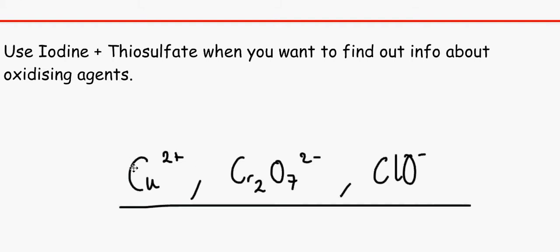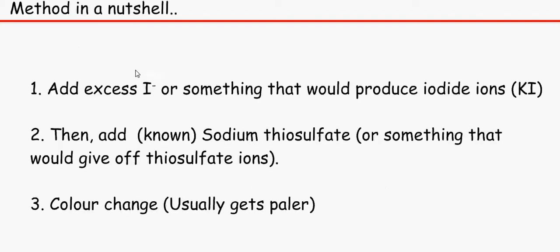These are the three most common oxidizing agents that you would come across in your exam. If you see these three things under investigation, most likely you are going to use iodine and thiosulfate. So how does it work? Number one: the oxidizing agent under question — so let's say Cu2+ — we need to add excess iodide ions.